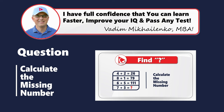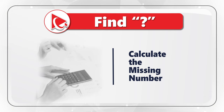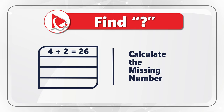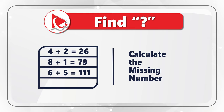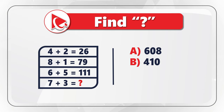Here's a very interesting question which tests your ability to find solutions to unusual problems. You're presented with four expressions. In the fourth expression, the result is missing. The first expression is 4 plus 2 equals 26. The second is 8 plus 1 equals 79. The third is 6 plus 5 equals 111. In the fourth expression, 7 plus 3, you need to find the result, which you select from choices A 608, B 410, C 290, and D 375.